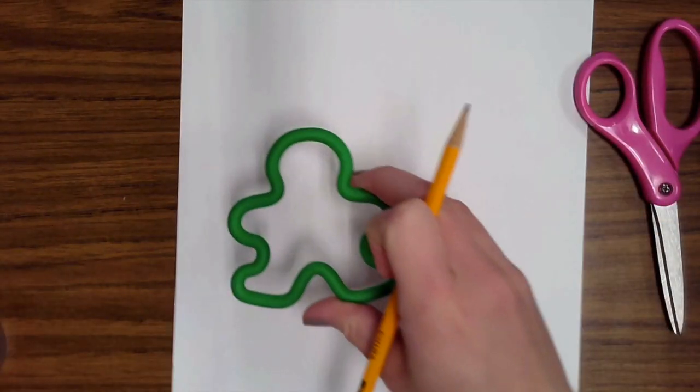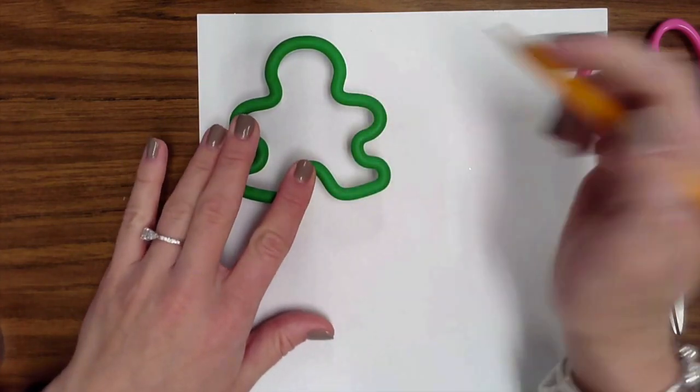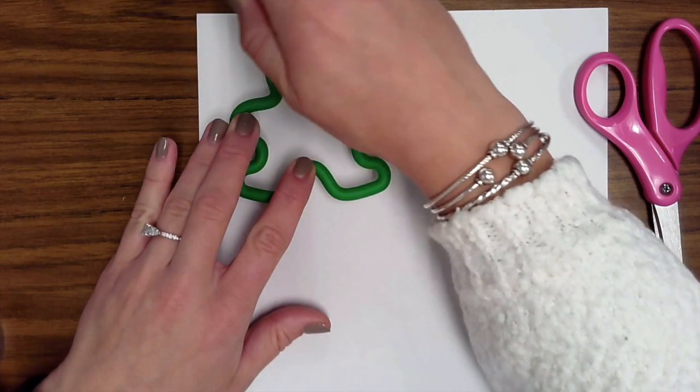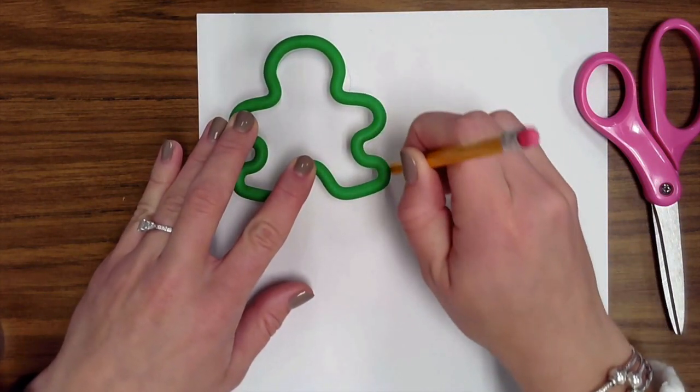So we're going to practice tracing our cookie cutters. We're going to use our helper hand to hold it steady. We're going to trace around the cookie cutter. You want to make sure you're holding it steady so it doesn't move.